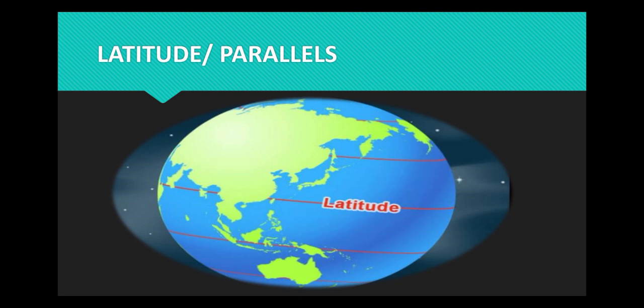Latitude. The imaginary lines drawn horizontally on the Earth's surface from west to east are called latitudes. There are 180 latitudes or parallel circles drawn around the Earth's surface both in northern and southern hemisphere respectively.